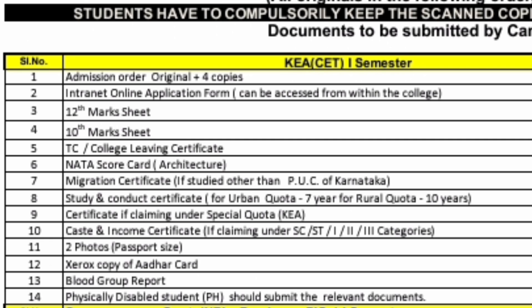Next is the 12th marksheets and Xerox copies, and TC which is the college leaving certificate for all students from Karnataka. If you are an architecture student, you also need to bring your NATA scorecard. Migration certificate is required for students who have done their class 12th or PUC from outside of Karnataka. Study and Conduct Certificate is only for Karnataka students — for Rural Quota (10 years) and Urban Quota (7 years). Caste and income certificates if claiming SC/ST category 1, 2, or 3. Two passport-size photos, Xerox copy of Aadhar card, blood group report, and physically handicapped students should also bring their relevant documents.